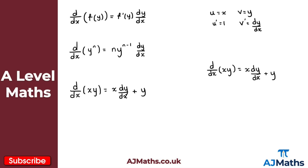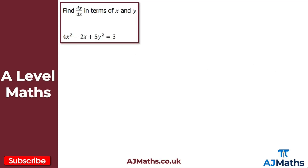That's our quick introduction to implicit differentiation. What we're going to do now is take a look at a couple of practice questions. Starting with question 1, we need to find dy by dx in terms of x and y for the equation 4x squared minus 2x plus 5y squared equals 3.